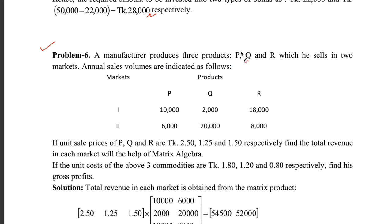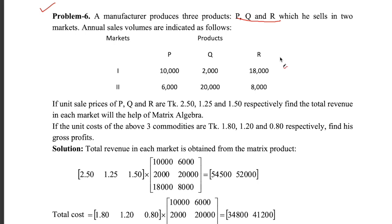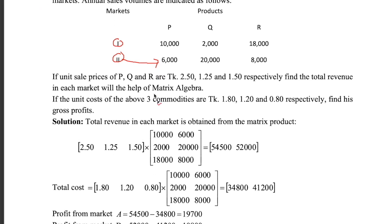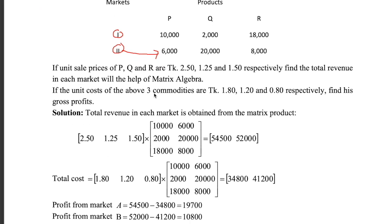A manufacturer produces three products P, Q, R and the total sales volume in two markets — market one and market two — is given. In market one: ten thousand of product P, two thousand of product Q, and eighteen thousand of product R. Similarly the sales volumes for market two are given. The question is: what is the total revenue in each market if the selling price per unit is given respectively? You need to create a row matrix using the sales price per unit.